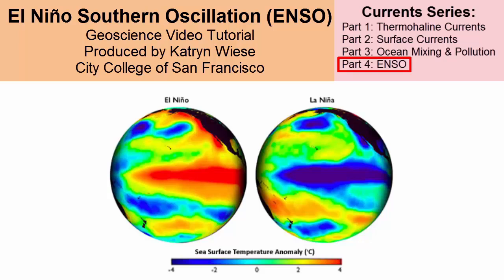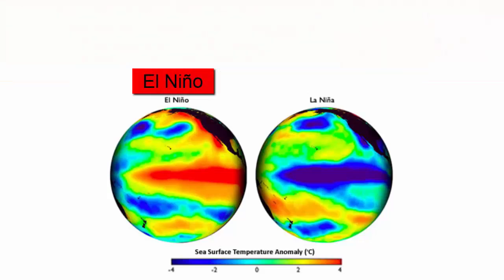The El Niño Southern Oscillation is a cyclic climate phenomenon that has a big impact on California. The oscillation of this phenomenon is between two end member climate states, El Niño and La Niña, which swing back and forth with a varying interval and varying intensity.